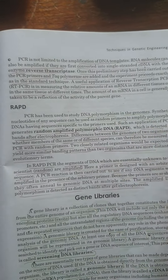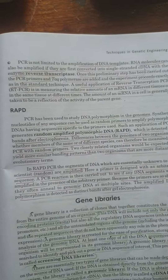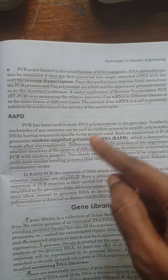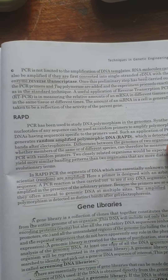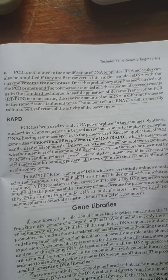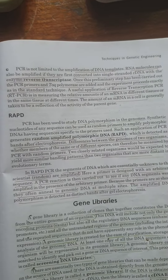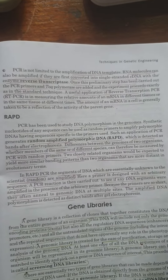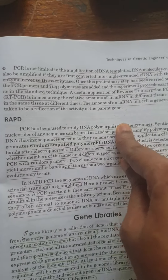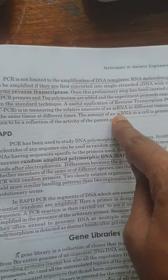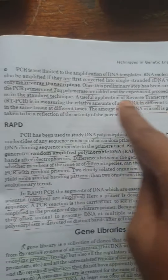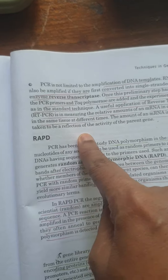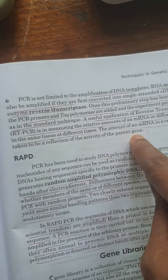The gene product is a protein — protein is the product of the genes. So if the gene is active, there will be mRNA, and the mRNA will be translated to protein or polypeptide. So we can find out that the amount of mRNA in a cell is generally taken to be the reflection of the activity of the parent gene.